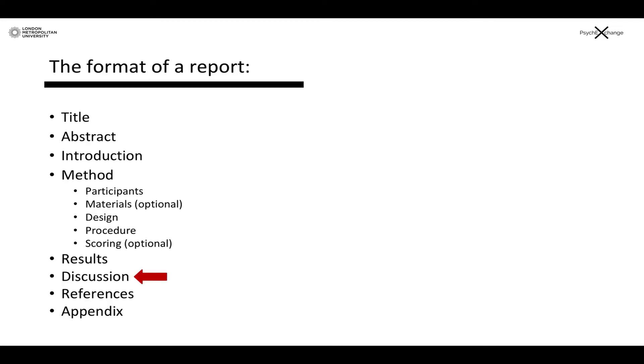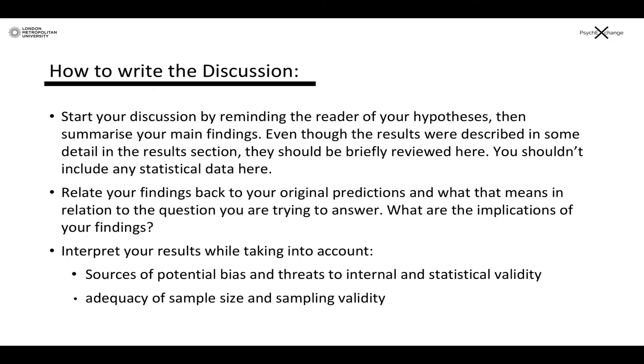Right, so next up we have the discussion. Last but not least, a discussion should be started by reminding the participants of what the hypothesis was and then summarize the results without using any numbers. Within the results section, the results are described but not explained. You should explain them here in the discussion. The findings should be related back to the hypothesis and the aims. Did you find what you were looking for?